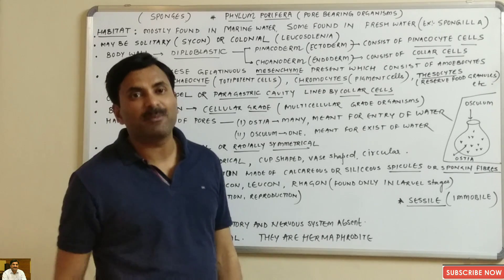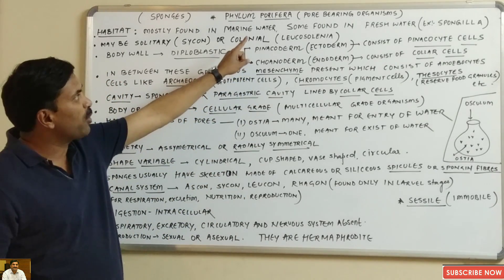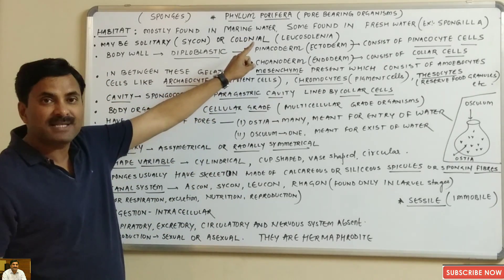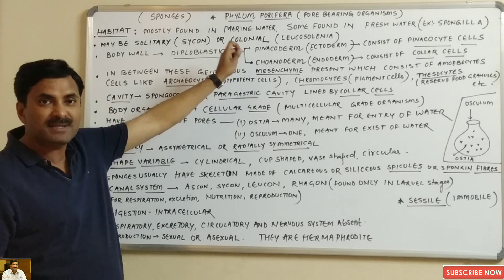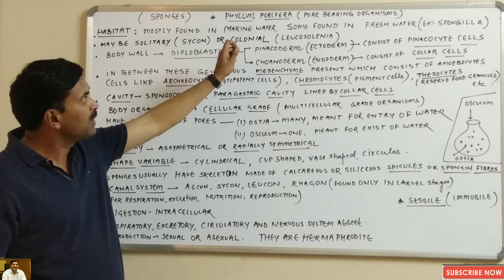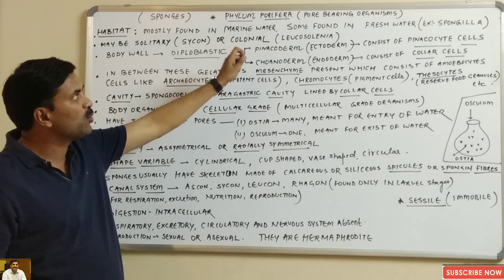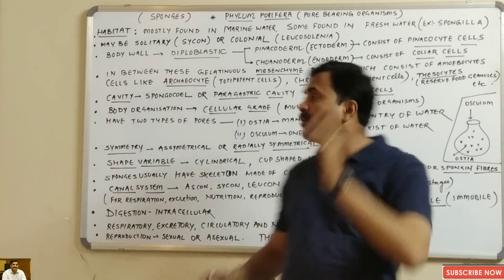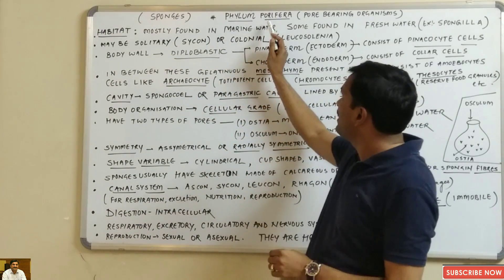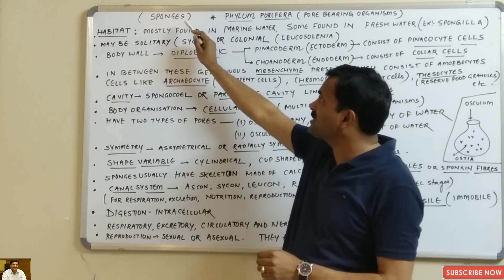Hello students, today we will be talking about a non-chordata phylum: the Porifera. The question arises why this phylum is called Porifera. Porifera means pore-bearing organisms — the characteristic feature of these organisms is that they have many pores in their body. These members are also called sponges, so the common name of the phylum Porifera is sponges.